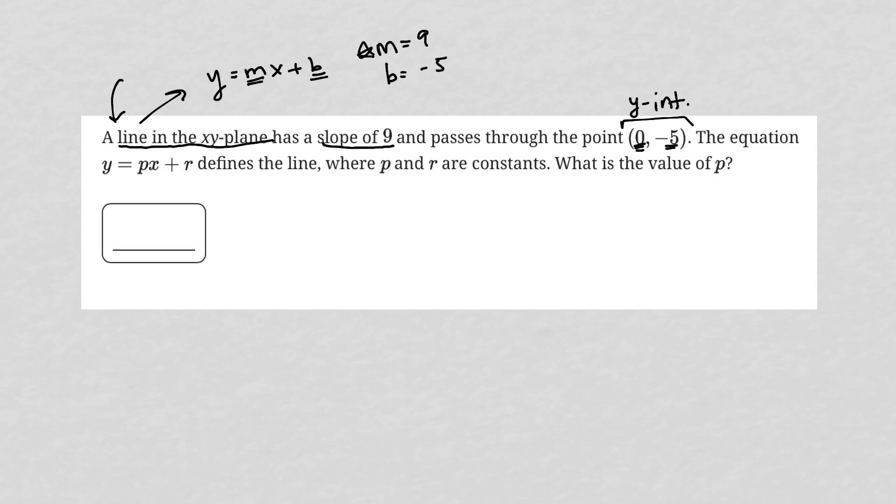So now that I know m is 9 and b is negative 5, I actually know the equation must be y equals 9x minus 5. We keep reading, it says the equation y equals px plus r. Well that's funny, it's y equals px plus r is the exact same equation as y equals mx plus b, but m has been replaced by p.